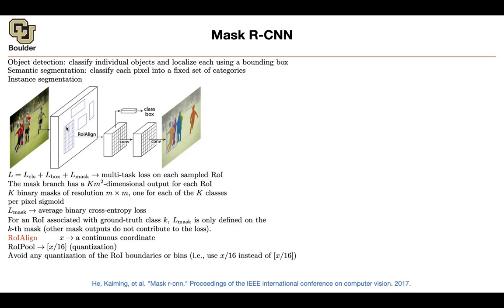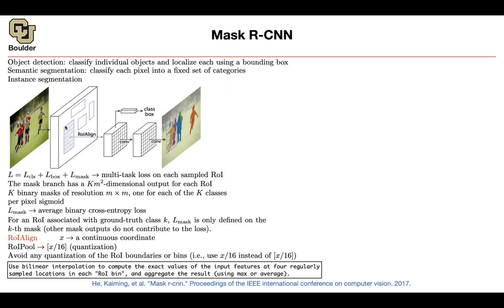You start with X and find the locations of your bins. Per each bin, you sample four points, and on those points you do bilinear interpolation — which we learned about in spatial transformer networks. So you're going to do bilinear interpolation and know the exact pixel values. Per each bin you need a single number, so you aggregate the results: either find the maximum per each bin or average it. Now you are not sacrificing the location of these bounding boxes.